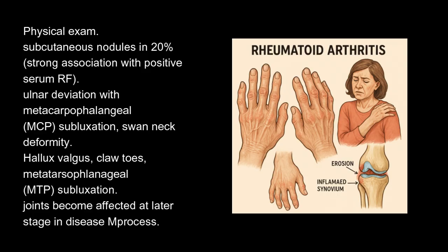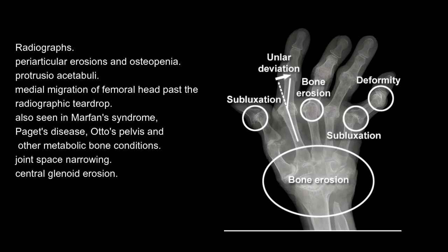Joints become affected at a later stage in the disease process. Radiographic findings include periarticular erosions and osteopenia, and protrusio acetabuli — medial migration of the femoral head past the radiographic teardrop. This is also seen in Marfan's syndrome and Paget's disease.